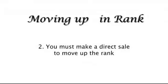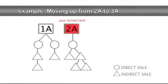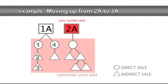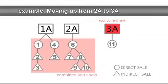Second, you must make a direct sale to move up to the next rank. For example, in order to move up from 2A to 3A distributor, you must have achieved at least ten combined units sold. Then, as soon as you make another direct sale, you move up to 3A distributor. The first sale in each rank must be a direct sale.